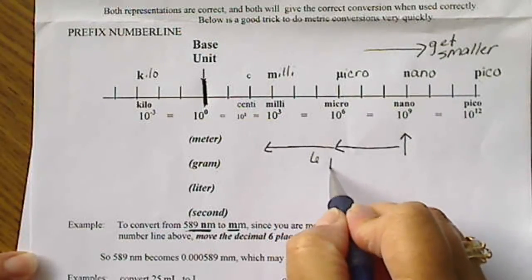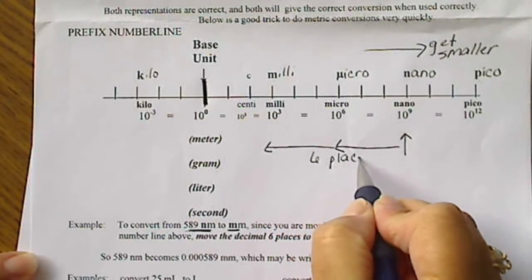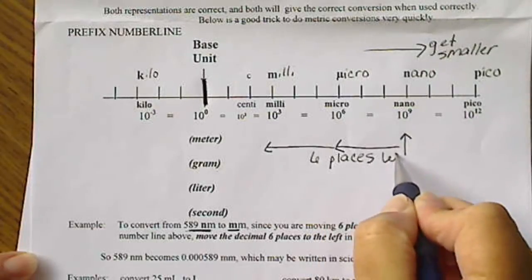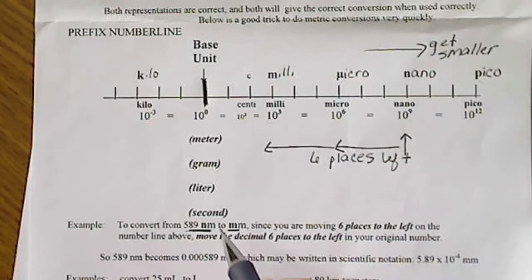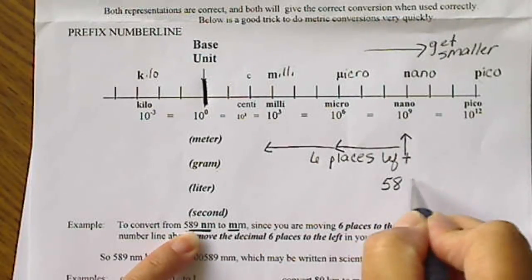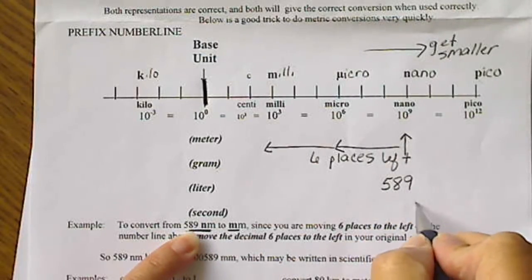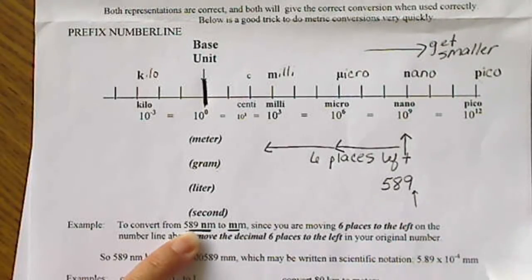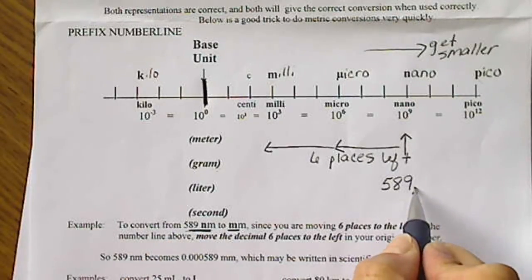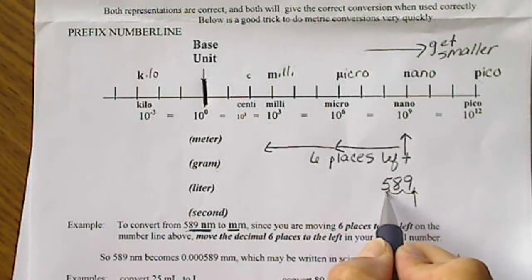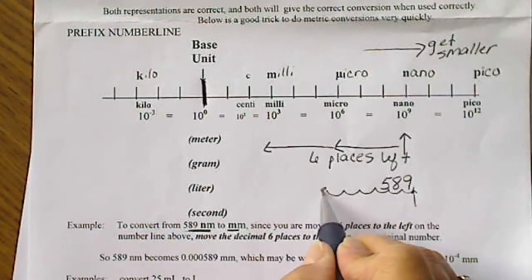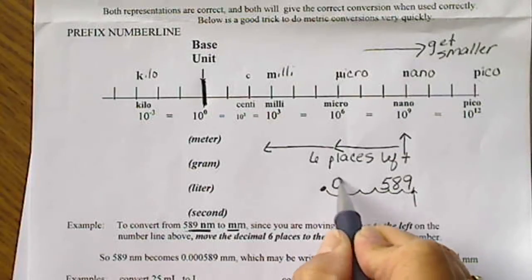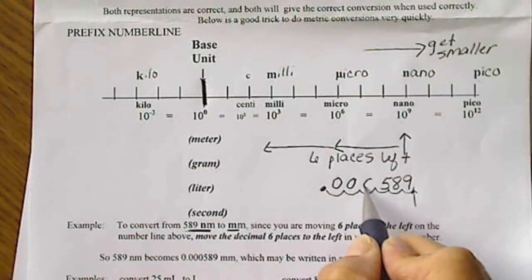So this amounts to moving six places to the left. So we are going to move the decimal six places to the left. If we take 589, the decimal will be here. Of course, it's not written. We're going to move the decimal one, two, three, four, five, six. Place the decimal here and then fill in these gaps with zeros.